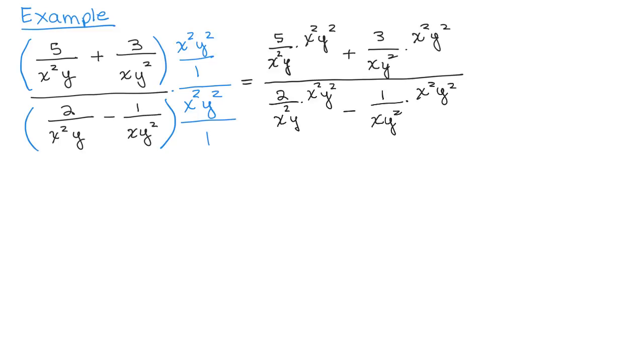Now if we did it correctly, we'll eliminate the complex fraction. Everything should cancel whatever's in the denominator. This x squared cancels with that. Then we have a y squared over y, so that will leave a y up here.